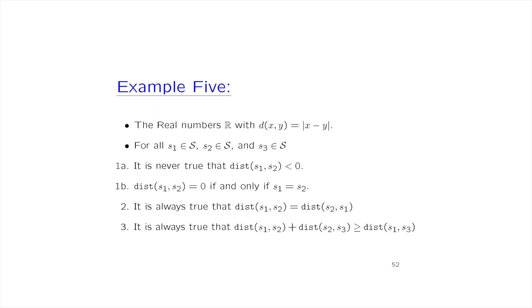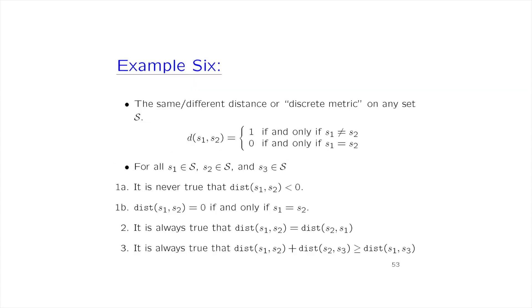The real number distance — absolute value of the difference — hits all the axioms but is boring. And the discrete metric: on any set S, if you input the same object twice, the output is zero; if you input two different objects, the output is one. It hits all axioms: it only outputs zero or one so it's never negative, we forced the separability condition, reversing inputs doesn't change the result, and you can verify the triangle inequality by trying all possibilities for S1, S2, and S3.